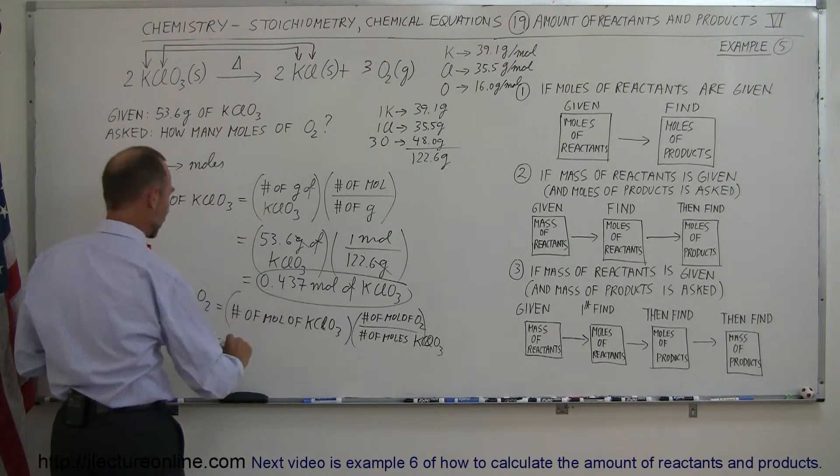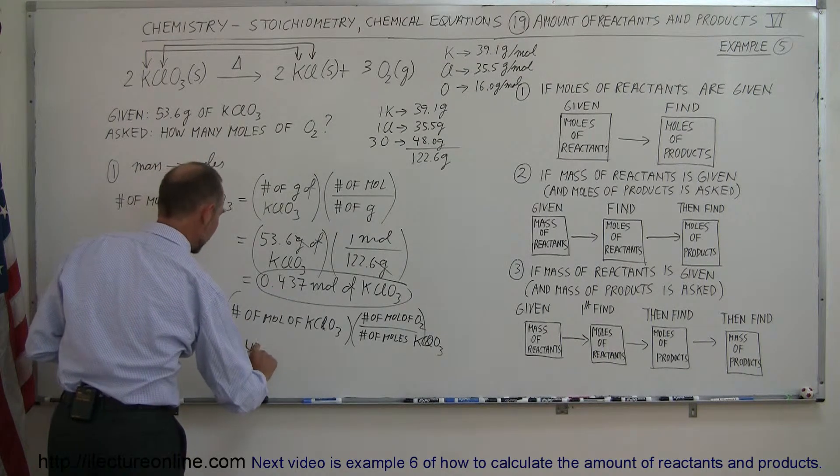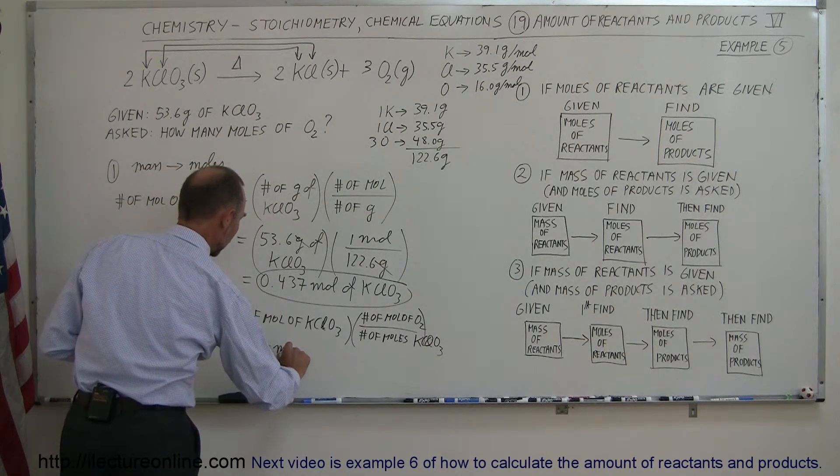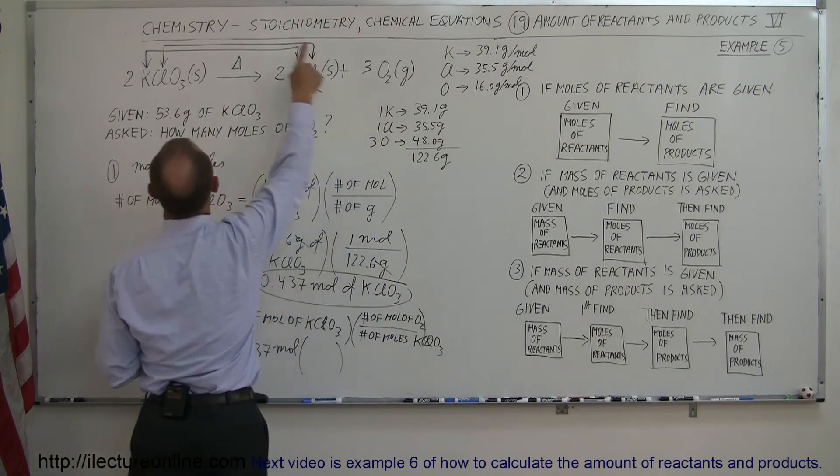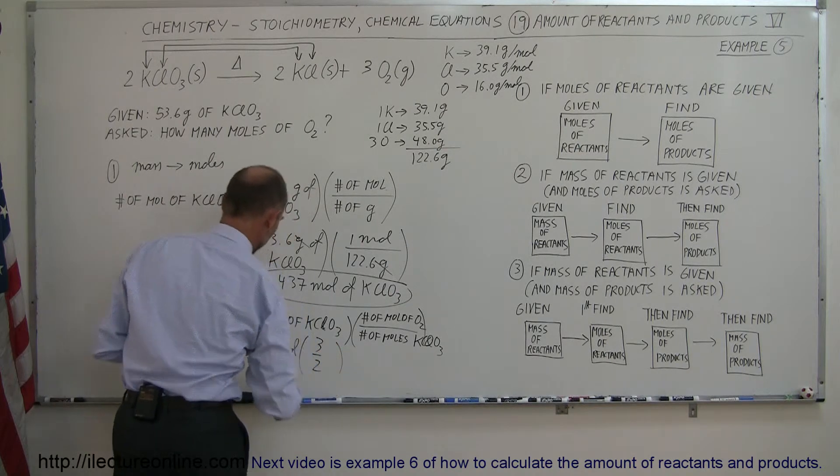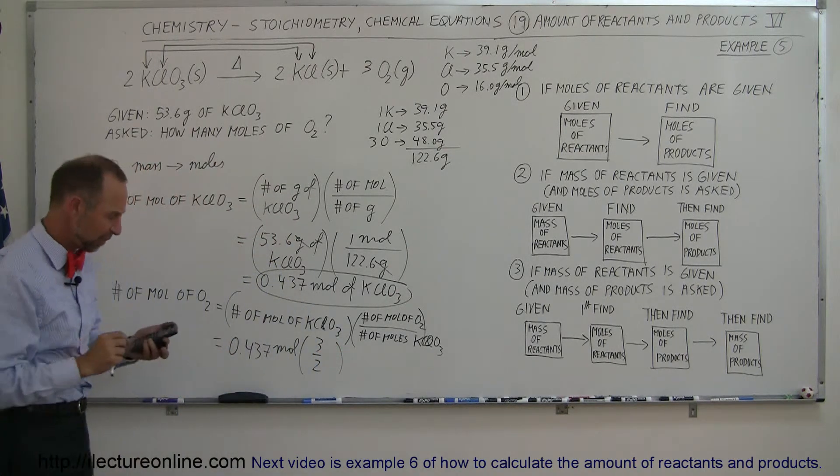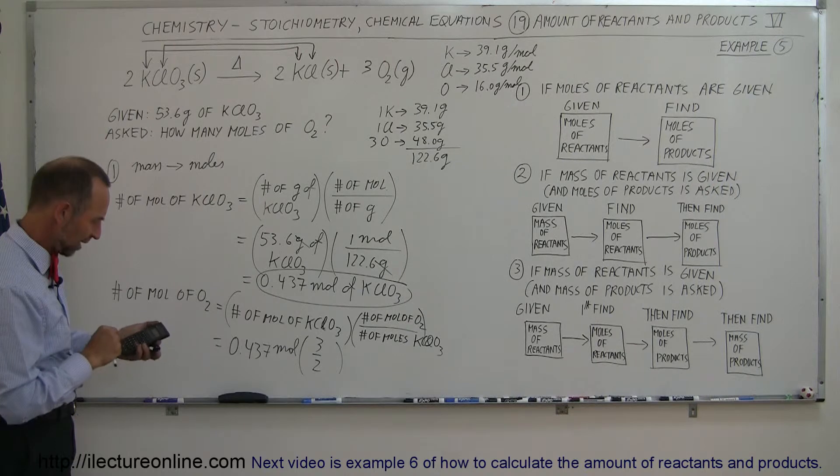All right, so this is equal to the number of moles that we have here, 0.437 moles times the ratio oxygen 3, potassium chlorate 2. So it's a 3 to 2 ratio. That means we'll end up with 1.5 times as many moles, so times 1.5,